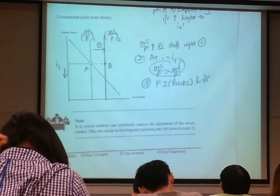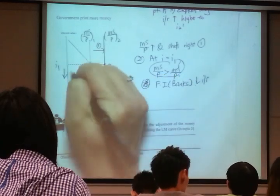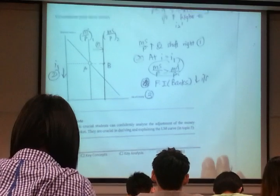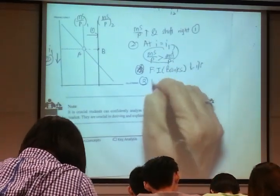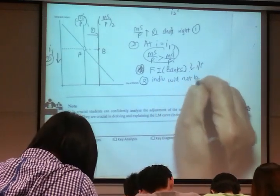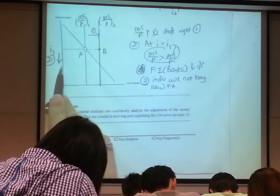So that was your standard step. Sorry, that was step two. We're still at step two. So step three, if financial institutions cut interest rates, it means individuals will not buy the new FA. Because the new interest rates drop.